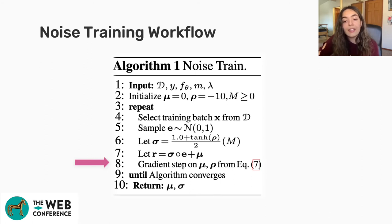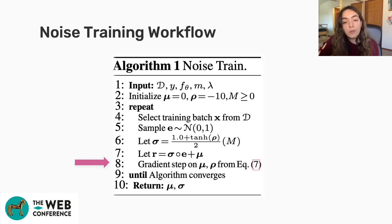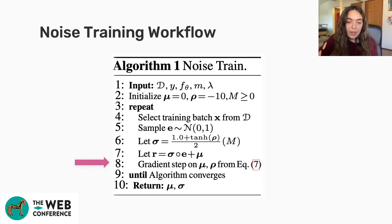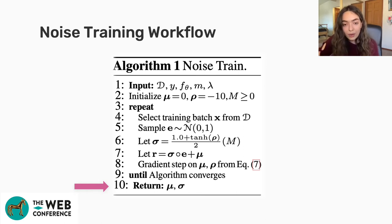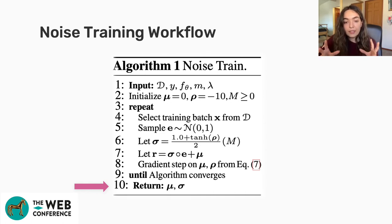Critically, the only trainable parameters are the standard deviation surrogate rho and mu — we are not changing the deployed neural network. This is why we don't need cooperation from the service provider; we're just figuring out what features their model uses. Once the algorithm converges, the key output is the standard deviation tensor, which acts as an importance map: higher values indicate less important features, and lower values indicate more important ones.